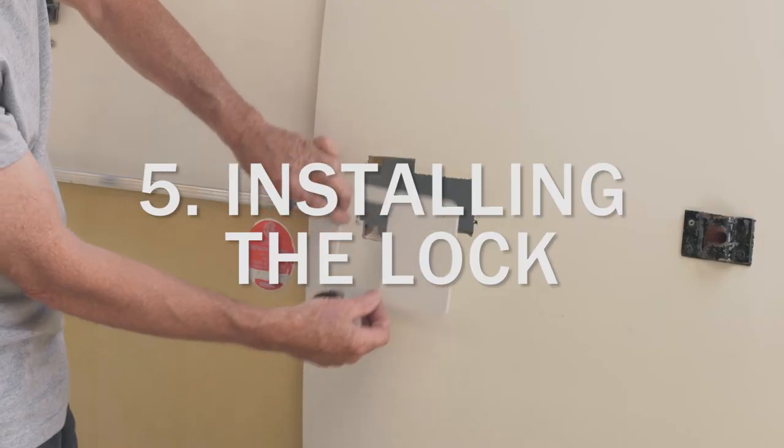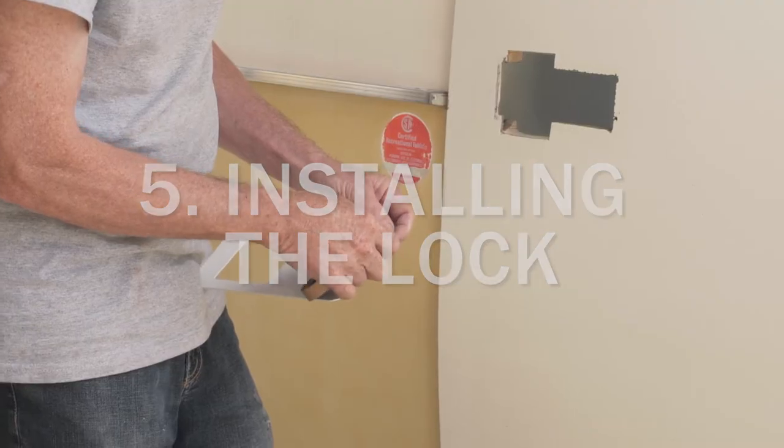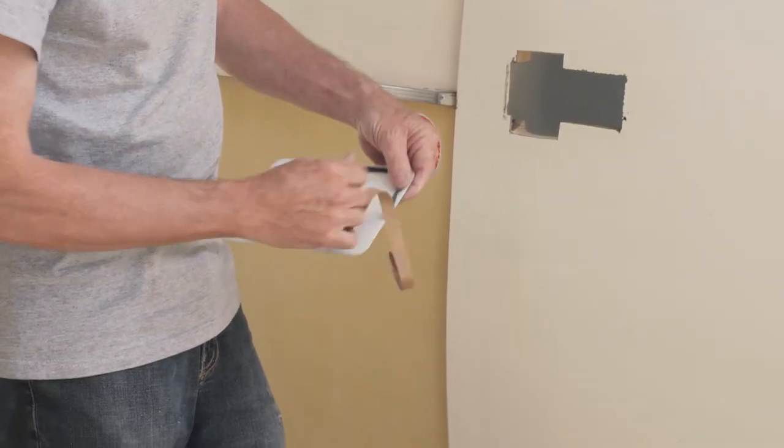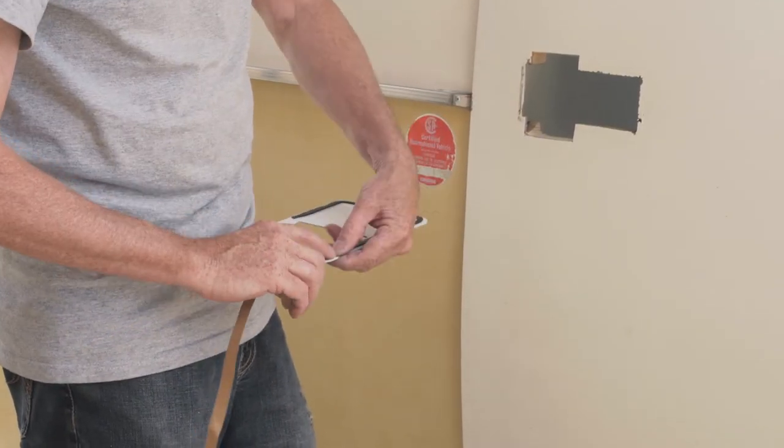Apply the butyl tape along the back side of the outer adapter plate. Try to keep the butyl tape between a quarter and half an inch away from the edge of the plate.